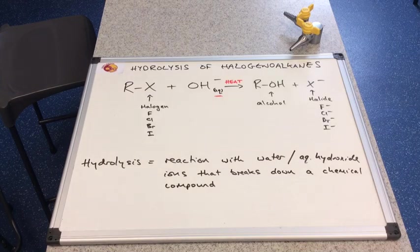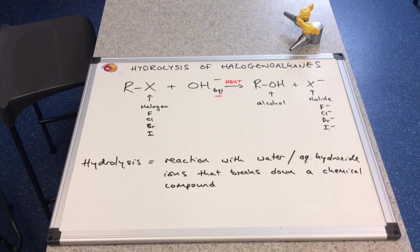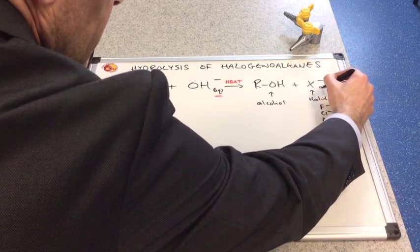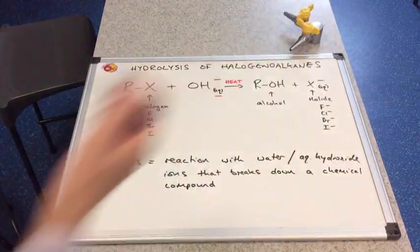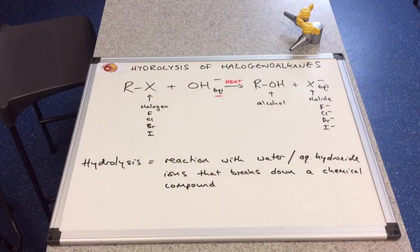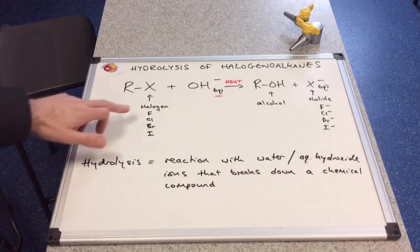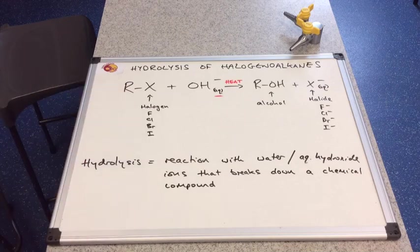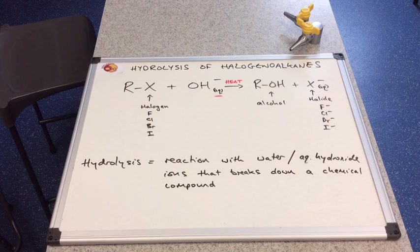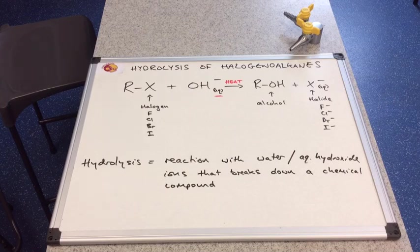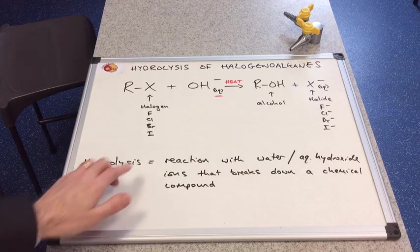I'm sure you got that right. So we produce an alcohol and a halide ion, and that of course would be aqueous as well. So we would produce, if we had a fluorine bonded to the carbon in the halogenoalkane, a fluoride ion.